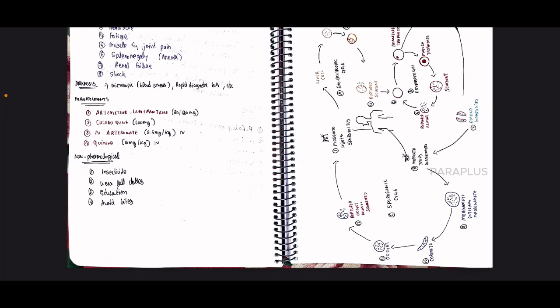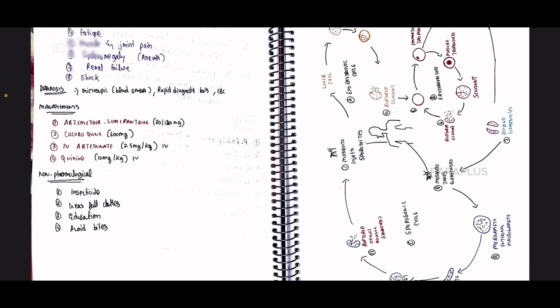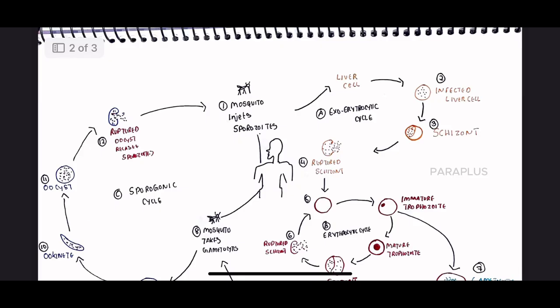Now let's see the pathophysiology. Here is a diagram of malaria's pathophysiology. How are we infected with malaria? Malaria affects the red blood cells and the liver — these are the two primary sites affected.